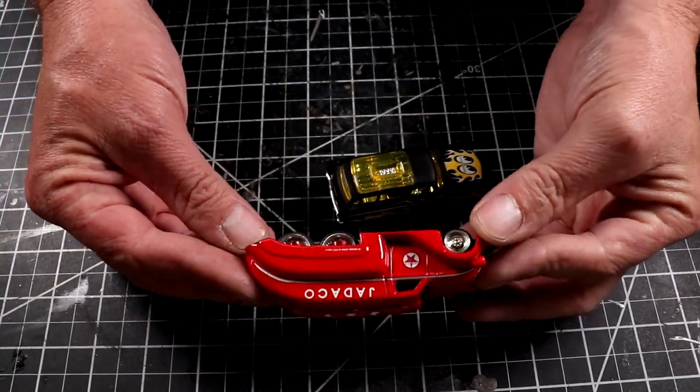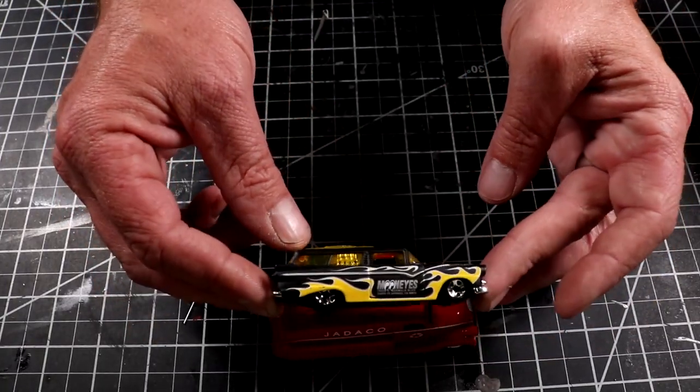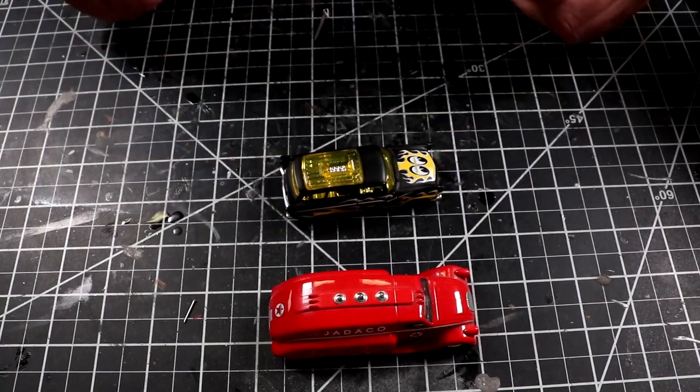Hey, it's Keith from Outlaw Speed Shop. In this episode, I'm going to try to take the wheels off of that and put them on this 8 crate from Hot Wheels, Moon Eyes Edition.